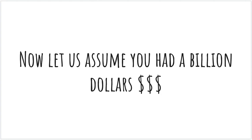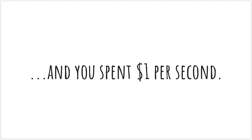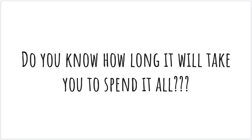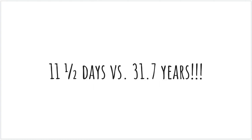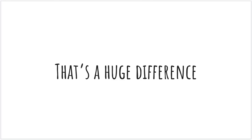Now let us assume you had a billion dollars — and a billion dollars is a lot of money. Again, you had to spend one dollar a second. Do you know how long it will take to spend it all? Thirty-one point seven years. So let's compare that: eleven and a half days versus thirty-one point seven years — the difference between a million and a billion. A million you could probably experience in your lifetime many times, but a billion would take thirty-one point seven years. That's a huge difference.